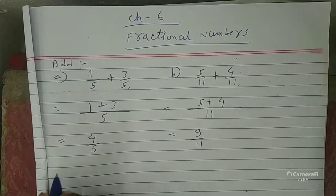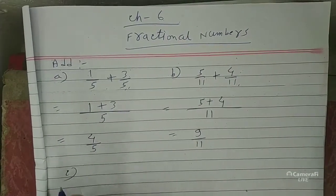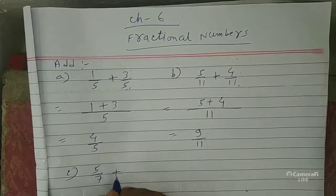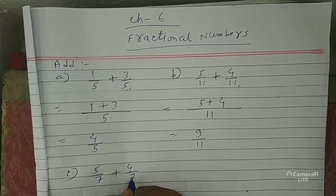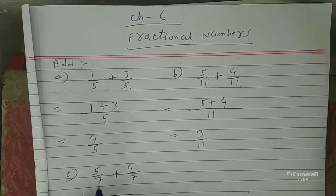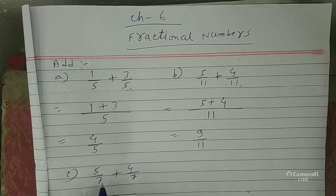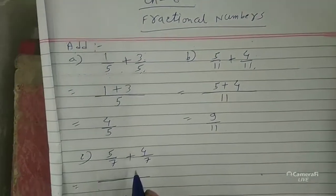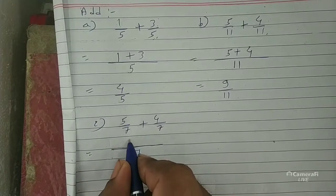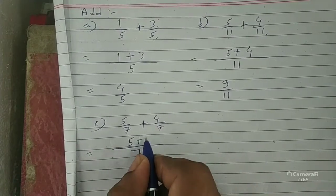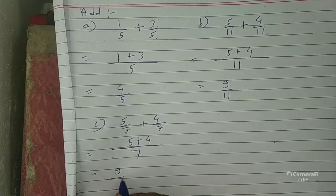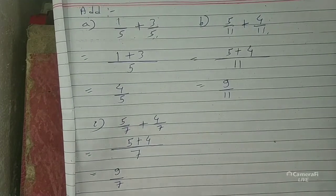Some another example — question C: 5 by 7 plus 4 by 7. First, check the denominator — it is 7, both same. Numerator 5 plus 4 is equal to 9 by 7.